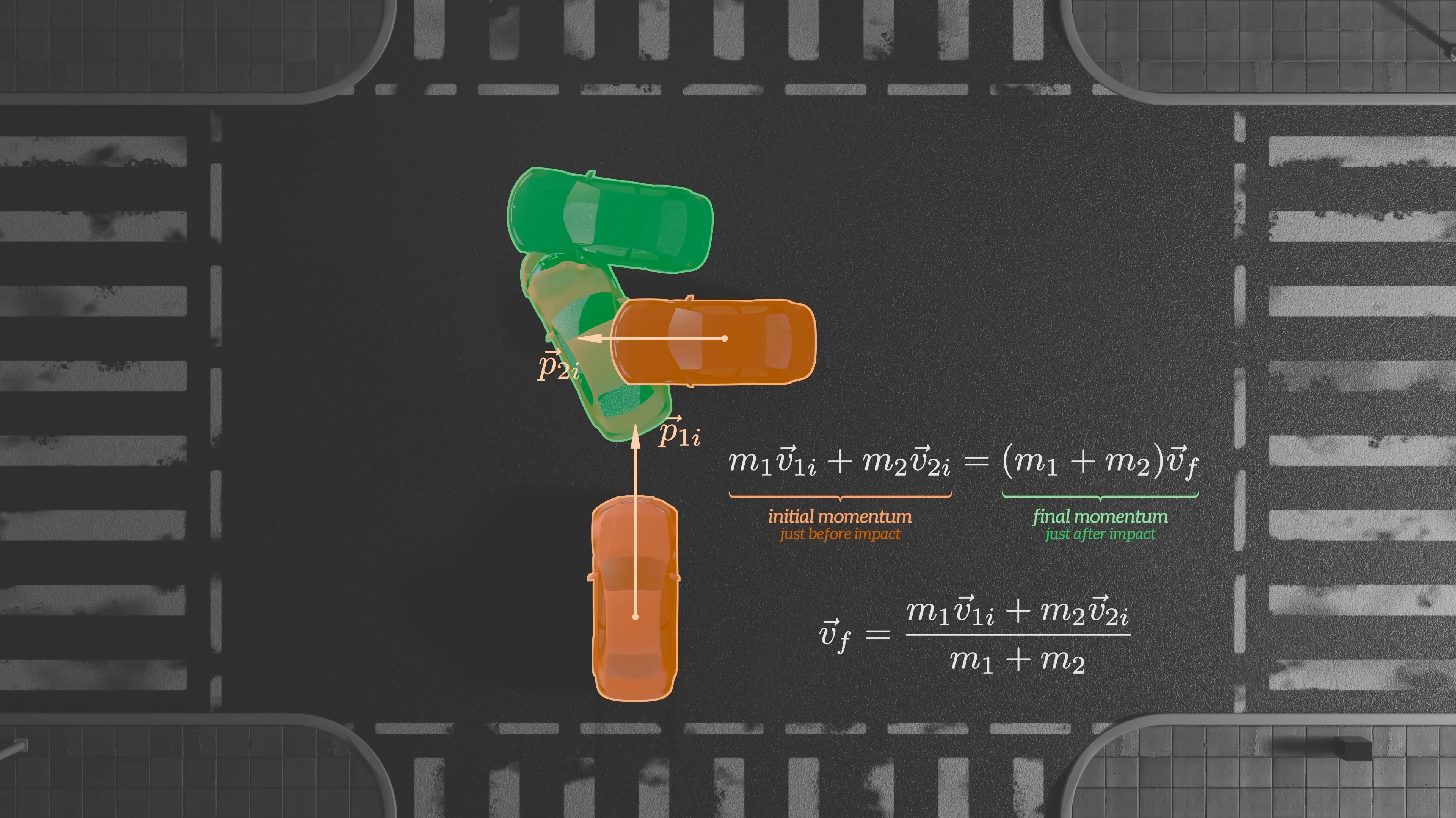Since momentum is a vector, we can also solve this graphically. The sum of the two momentum vectors before the collision is equal to the momentum vector after the collision. Here we've used conservation of momentum to predict the post-collision trajectory of the cars, without needing to know anything about the complex forces involved in the collision itself. That's pretty powerful.